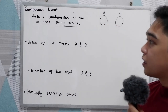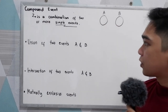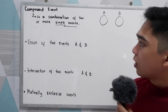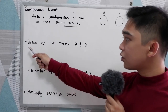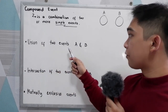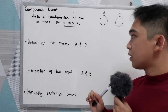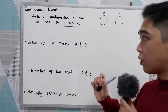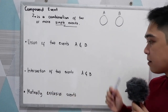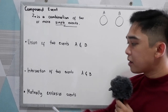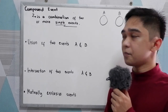In this lesson, we have three topics: lesson one, the union of two events A and B; afterward, we're going to illustrate the intersection of two events A and B; and mutually exclusive events.